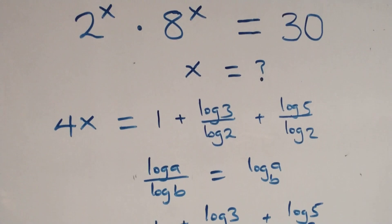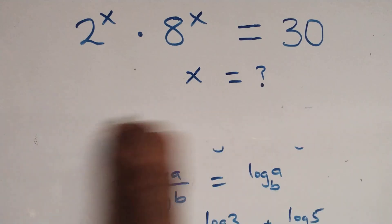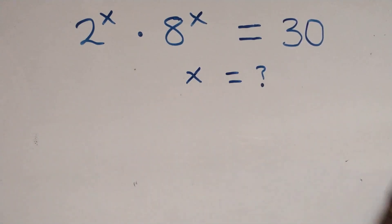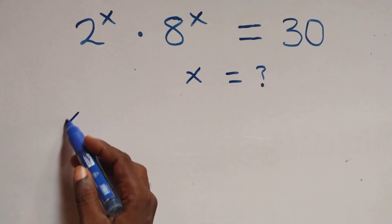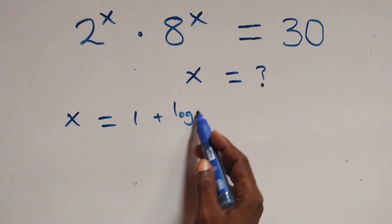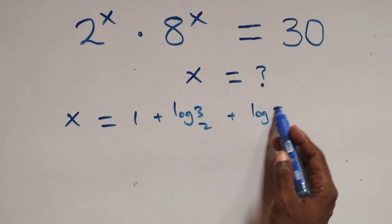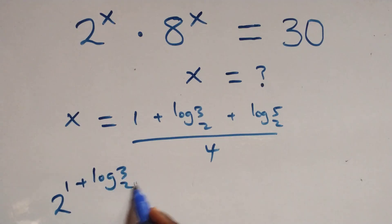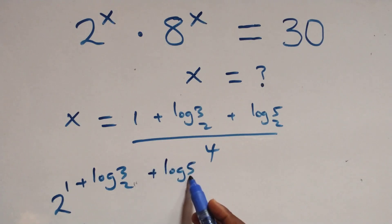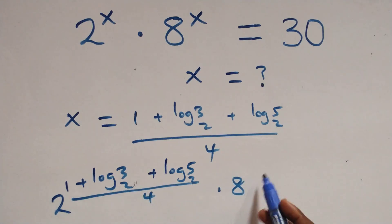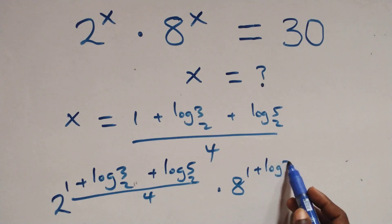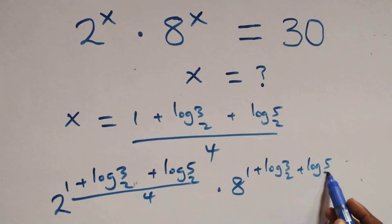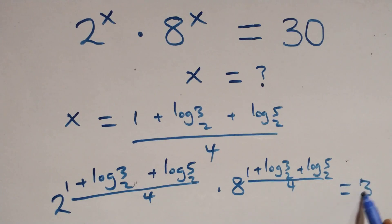Let's check here if this satisfies the given problem. We substitute the value of x, which is x equals to 1 plus log 3 base 2 plus log 5 base 2 all over 4. So we check: 2 raised to power that expression, times 8 raised to power that same expression, equals to 30 on this side.